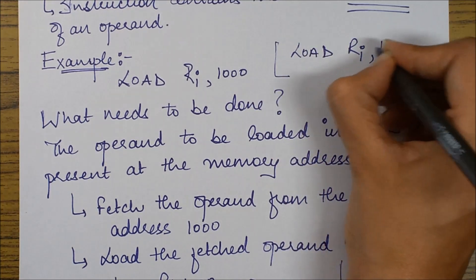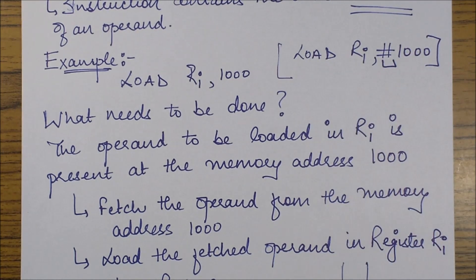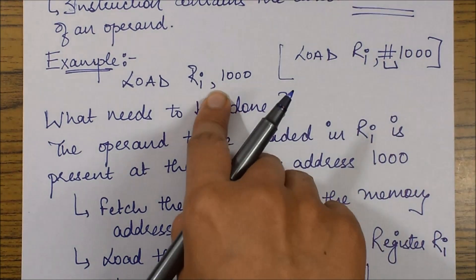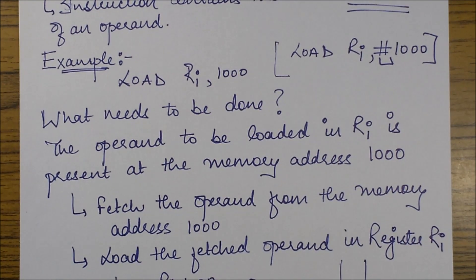If I would write it over here, the instruction was this. So this hash represented that this value is the value of the operand that we have to load in RI. Over here the absence of this hash represents that this address is a memory address from where we need to fetch that operand.